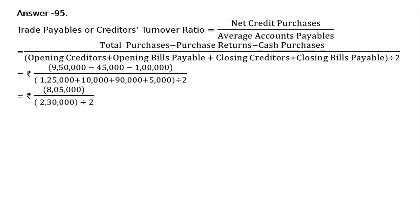For average accounts payable, that is equal to rupees 8 lakh 5,000 divided by rupees 1 lakh 15,000, that is equal to 7 times. This is the answer to question 95: 7 times.